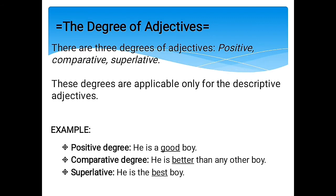The degree of adjectives. There are three degrees of adjectives: the positive, the comparative, and the superlative. These degrees are applicable only to descriptive adjectives. For example, positive degree: 'He is a good boy.' Comparative degree: 'He is better than any other boy.' Superlative: 'He is the best boy.' Good is the positive, better is comparative, and best is superlative. The degree of adjectives will be elaborated more by my co-member later. Next reporter: Charles Paderes.